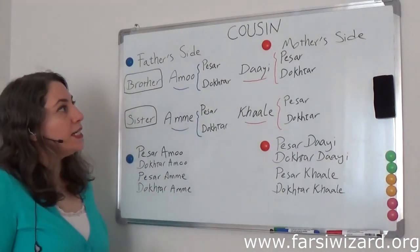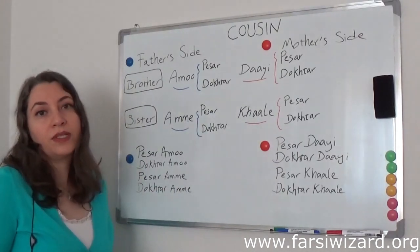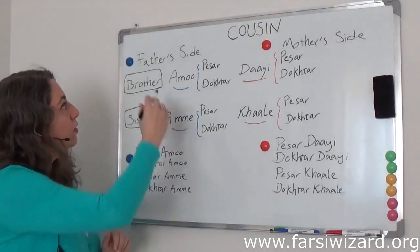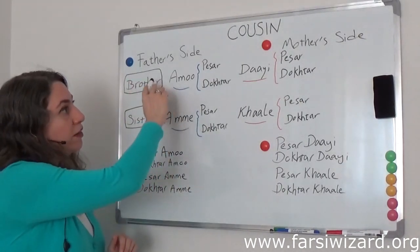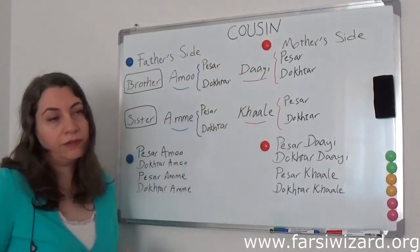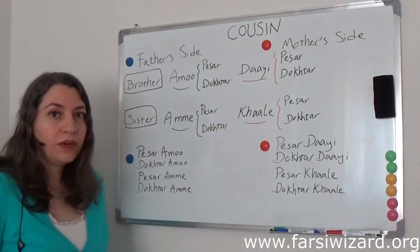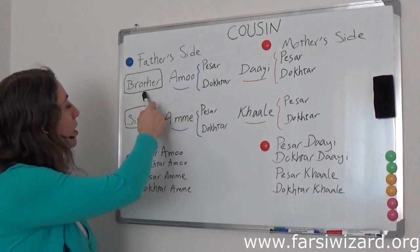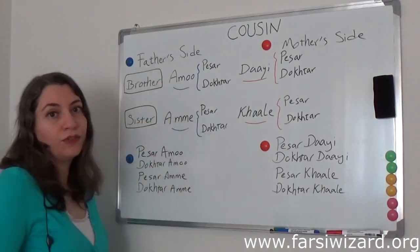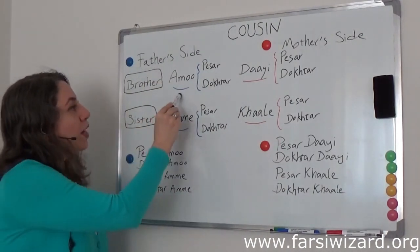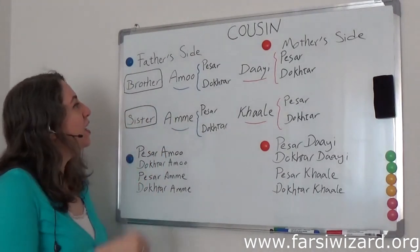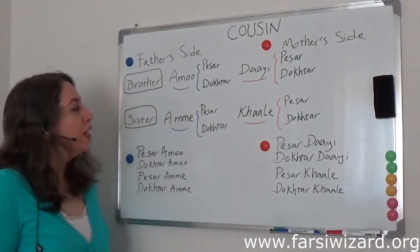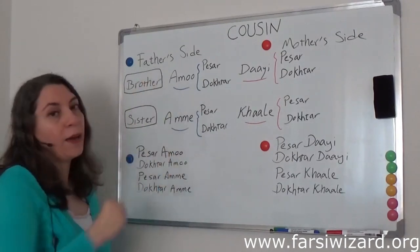The reason is in Farsi we have very specific words for specific cousins. Let's start with the father's side versus the mother's side. If you remember from one of the previous videos, the brother of your father is your 'amu.' So brother of father is 'amu,' and sister of father is 'amme.'